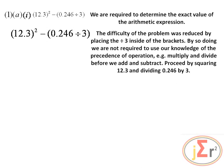We will proceed by squaring 12.3, and we are also going to divide 0.246 by 3. The difficulty of the problem is reduced somewhat because we have this placed in brackets. However, if we did not have the brackets, we could not subtract 0.246 from the squared value and then divide by 3. Placing the brackets there is an indication that we need to divide 0.246 by 3.